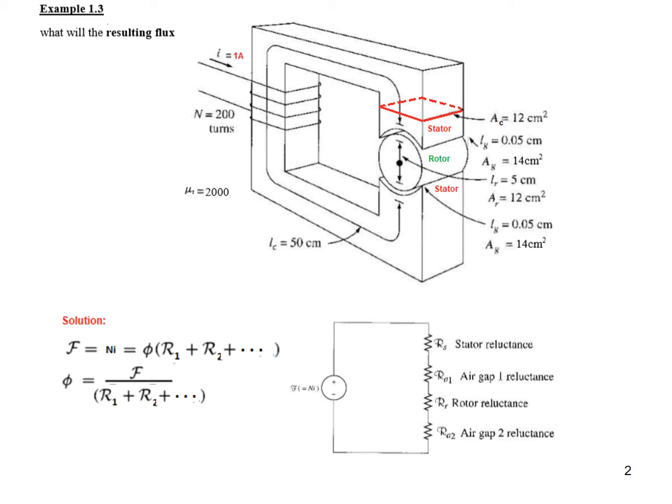Now let's see what the circuit is explaining. This is the main core which is primarily the stator of a motor, this is the rotor, and the information given here are the number of turns, 200 turns, and current flowing is 1 ampere.